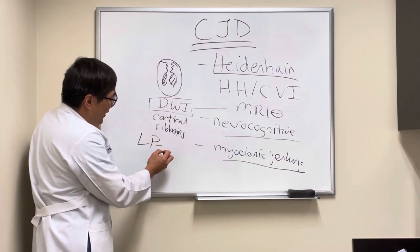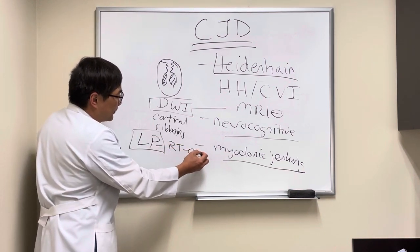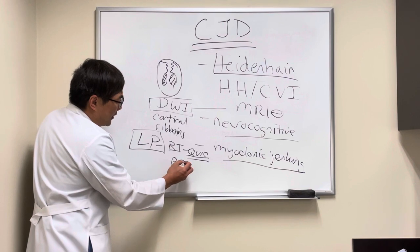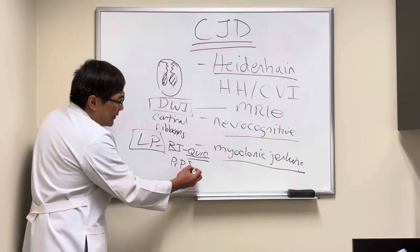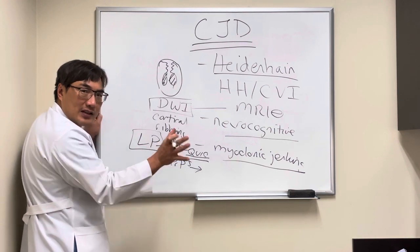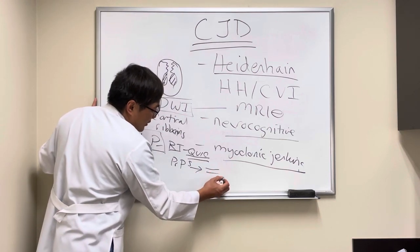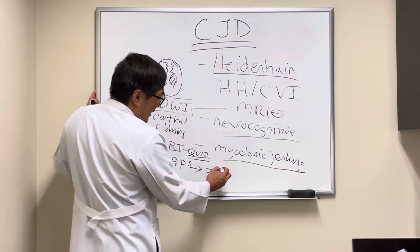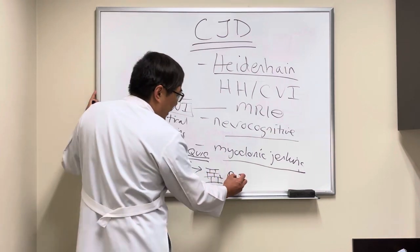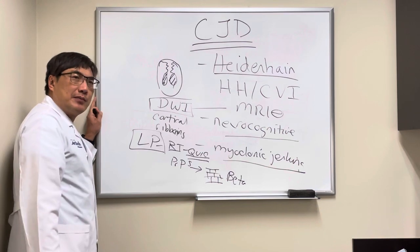We're going to do a lumbar puncture, and what we're looking for is the RT-QUIC. This is to look for the prion protein. We take the CSF and put it into the shaker — the RT-QUIC is basically shaking it up — and instead of the proteins being soluble oligopeptides, they aggregate in a beta-pleated configuration and form, like amyloid, sheets and sheets of this material.